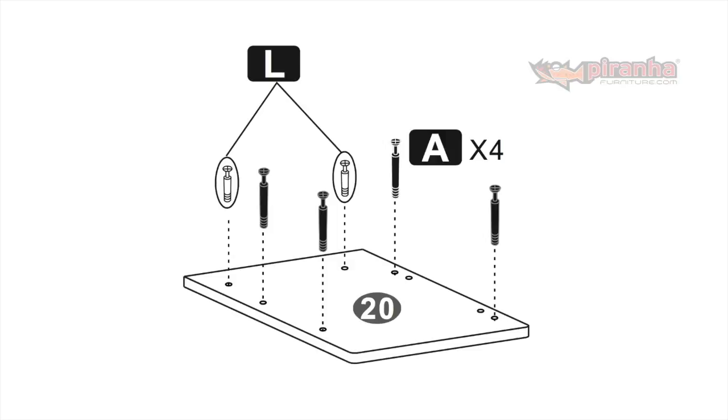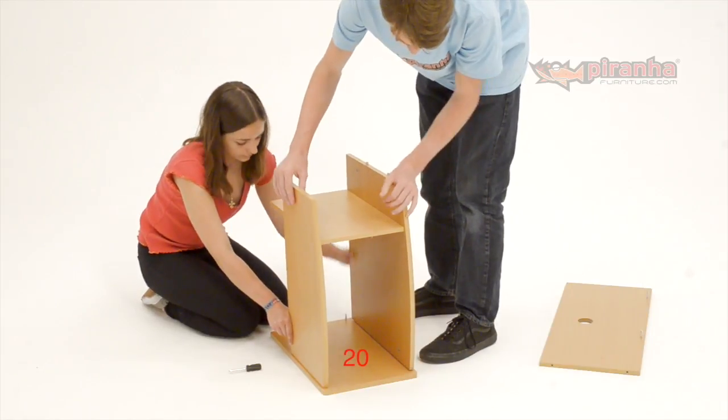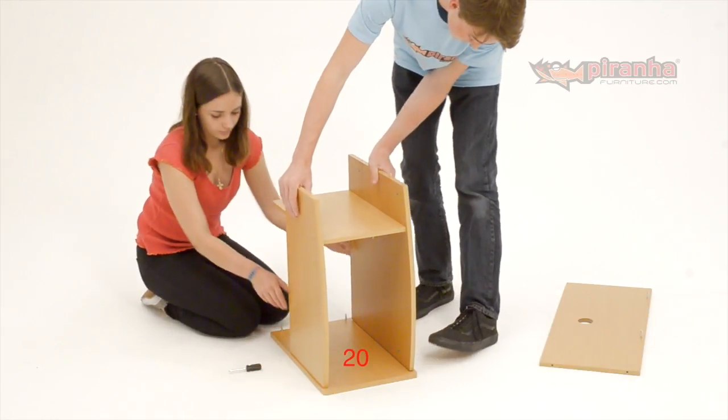Step 13. Attach the cam bolts to the base plate just as you did for the drawer unit. Slide the walls from the last step onto the base over the bolts and lock into place.